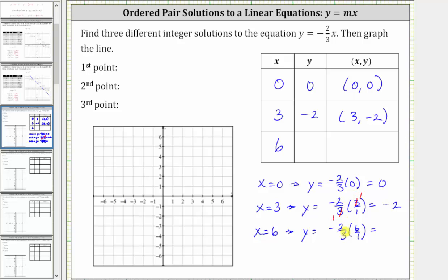three divided by three simplifies to one in the denominator. Six divided by three simplifies to two in the numerator. Leaving us with y equals negative two times two, which is negative four. Giving us the ordered pair solution, six comma negative four.